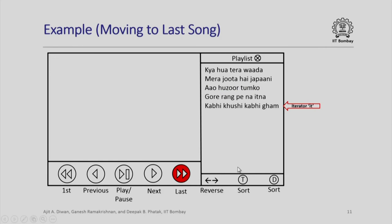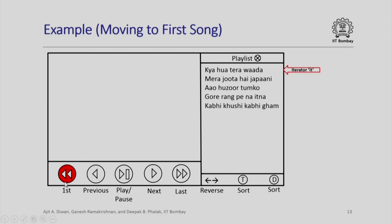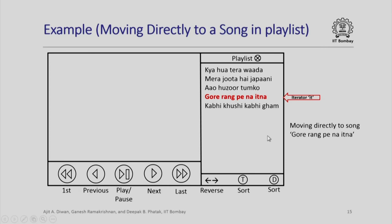I press the 'go to last' button, and the iterator 'it' now points to 'Kabhi Khushi Kabhi Gum', which was the last song. I press the previous button and the iterator moves to the previous song. I go back to the first position and the iterator shows 'Kya Hua Tera Vada'. Moving one step next, it goes to the next song. I can also move directly to a song by choosing 'Gore Rang Pe Na Itna', and the iterator positions itself there.